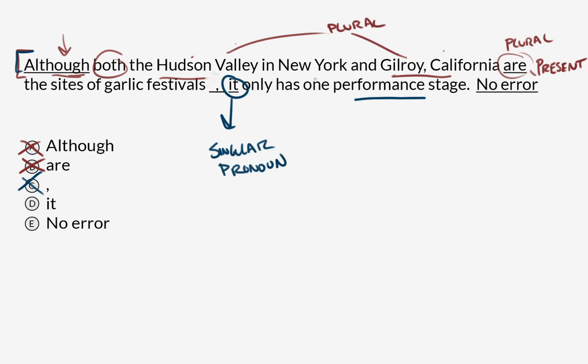But we've established that the previous clause has a plural subject. Hudson Valley in New York and Gilroy, California are the sites of garlic festivals. My question is: what is 'it' referring to?